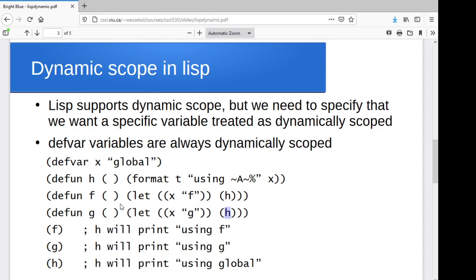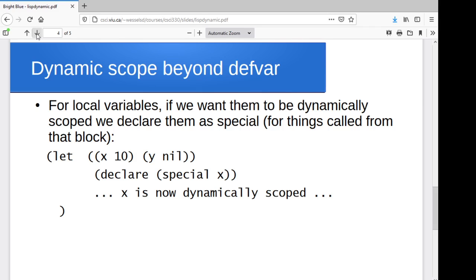All right, so with defvars, you do get this behavior you have to be aware of. Now, you can actually create more local, if you like, dynamically scoped variables. So I can go through and let's say I've got a local variable x, and I decide that from this point on in my call sequence, I want x to be treated as dynamically scoped. I'll declare x as special.